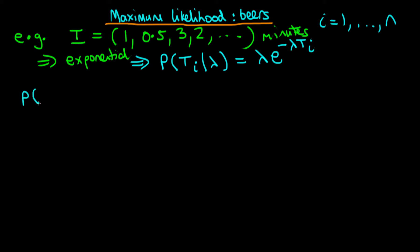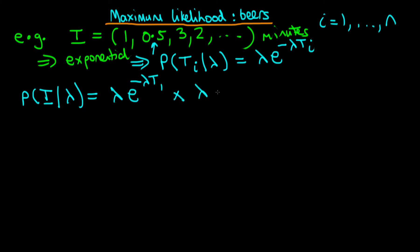The probability density of t — with a line underneath to indicate we're dealing with a vector — given lambda, is equal to: for the first observation, lambda e to the minus lambda t1. If we assume the second observation is independent of the first, we multiply the densities together, getting e to the minus lambda t2, where t2 would be 0.5, and we continue this up until the nth observation, getting lambda e to the minus lambda tn.